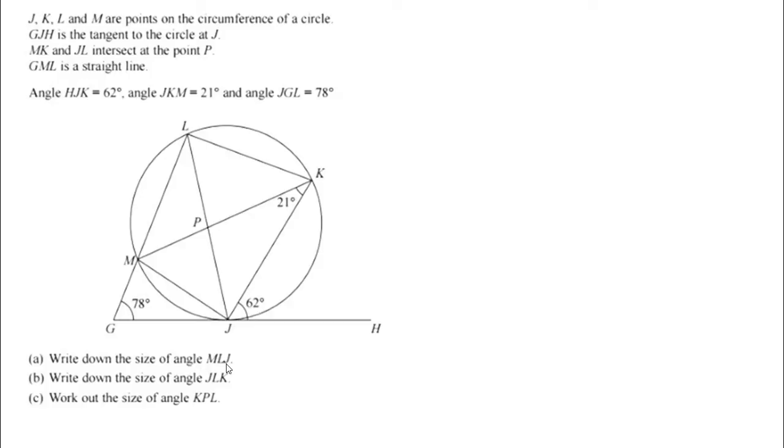So first of all, it says write down the size of angle MLJ. So we want to tell the examiner what we're doing, so we're going to write this out carefully. We're trying to find the size of angle MLJ. And it says we should be able to write it down. When it says write it down, it means that there's no calculating, there's no working out that needs to be done. So we should be able to just look at the diagram and work out what the angle is, knowing the circle theorems that we do.